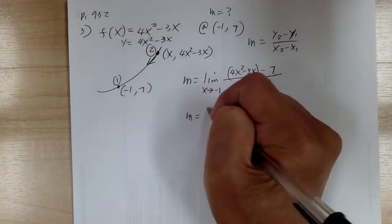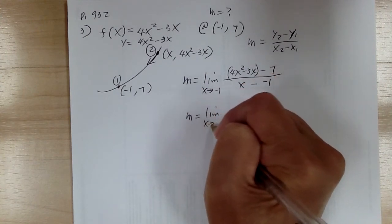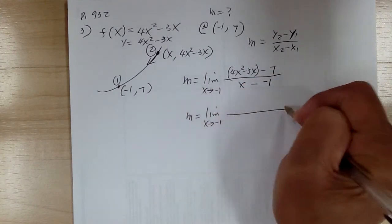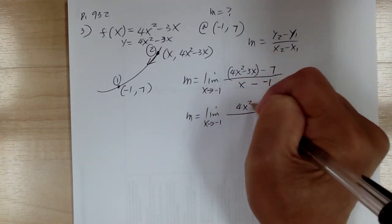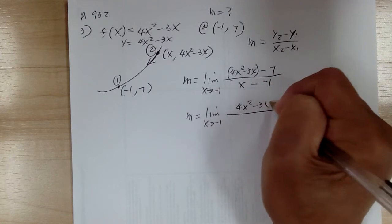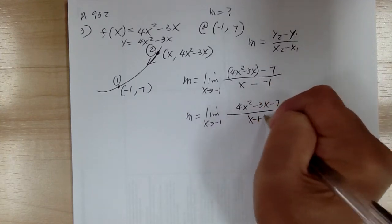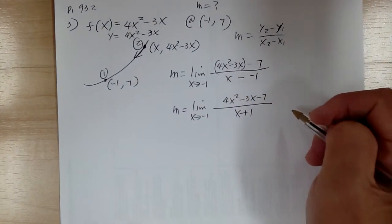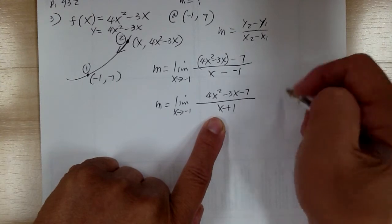So now we're going to simplify. You have 4x squared minus 3x minus 7 over x plus 1. And from here, you need to go and do factoring.